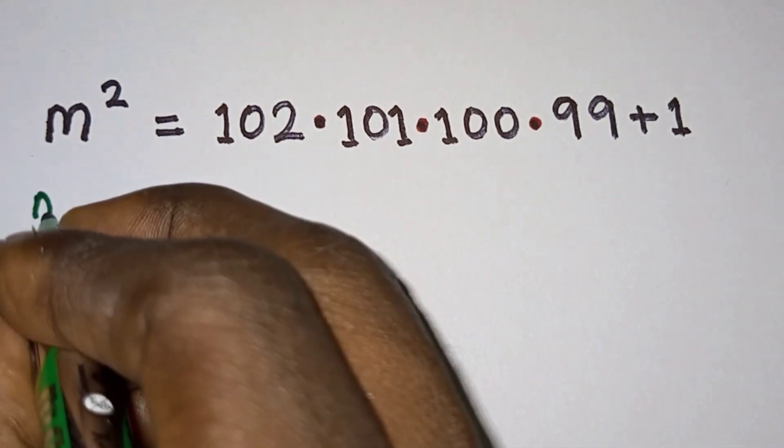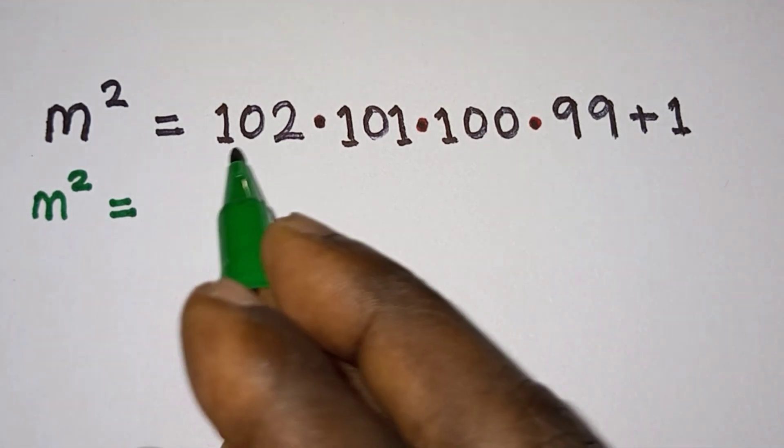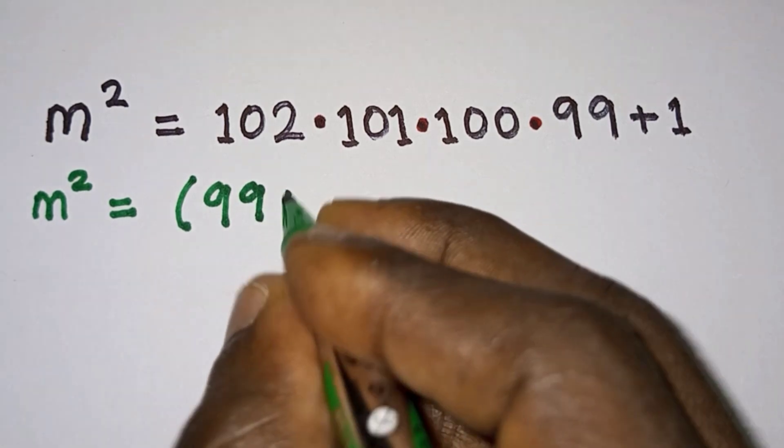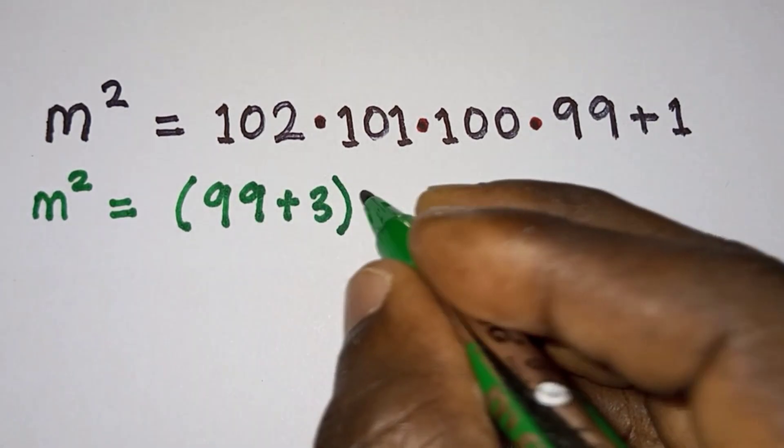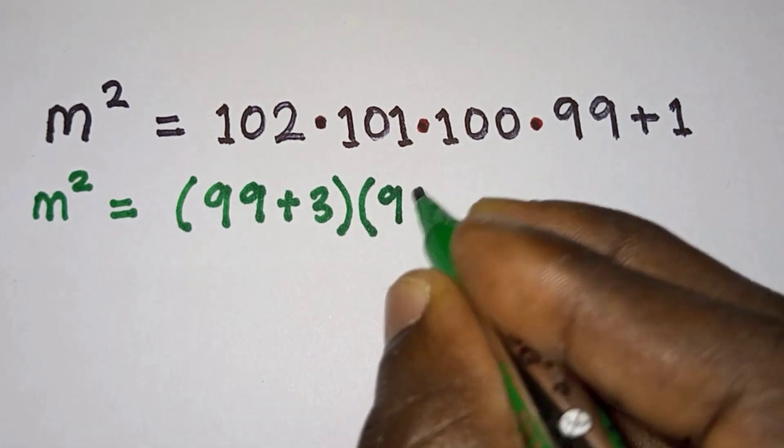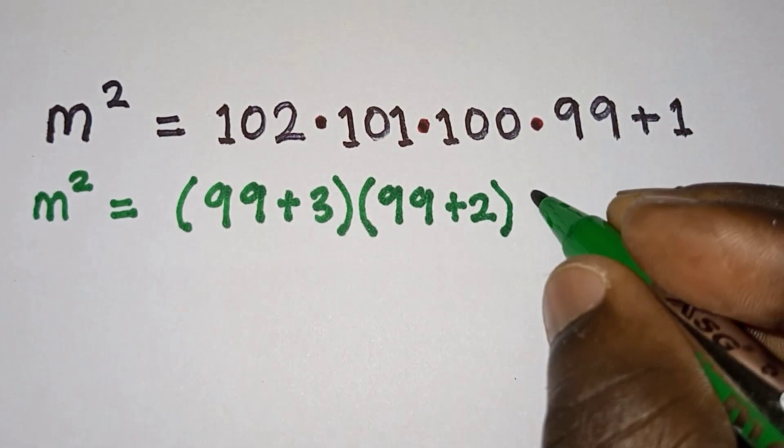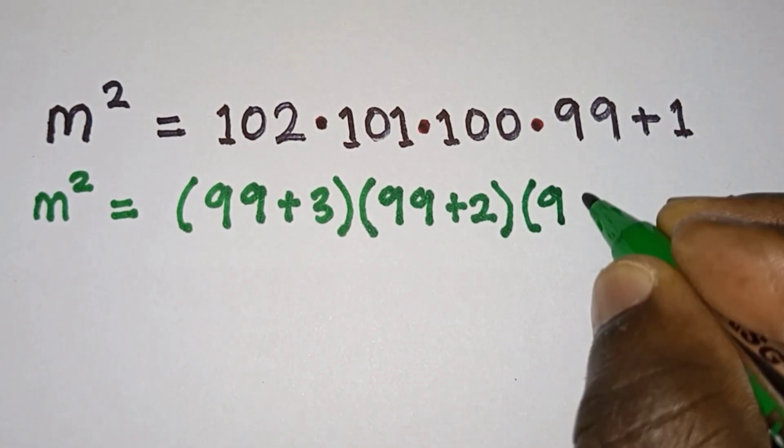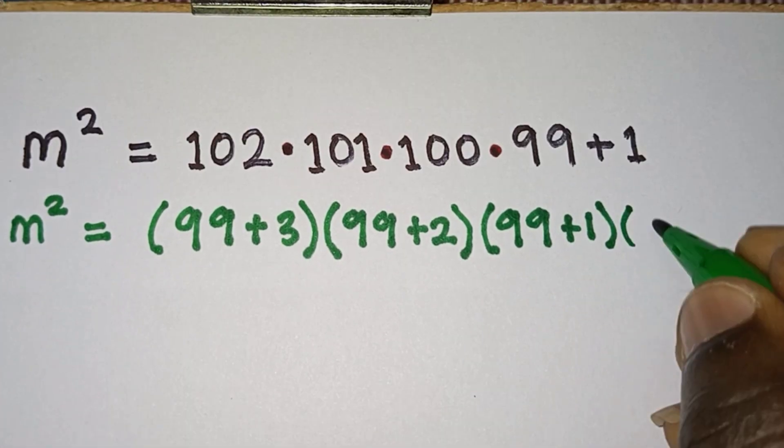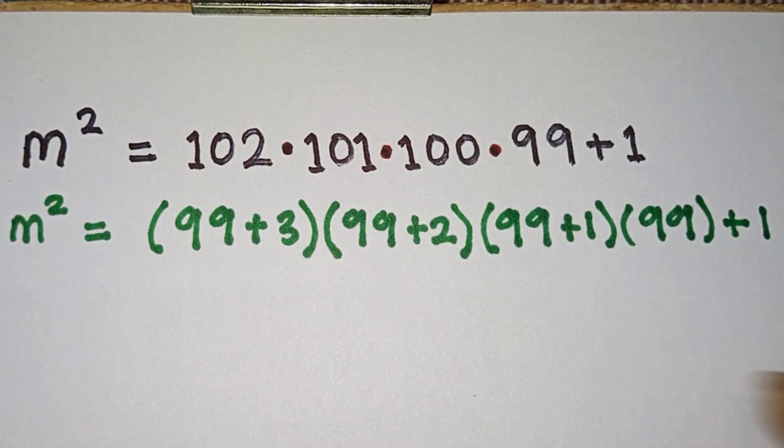We have m² equals, now we can write 102 as 99 + 3, then times 101 which is also the same as 99 + 2, then we have 100 which is 99 + 1, then we have times 99, then plus 1.